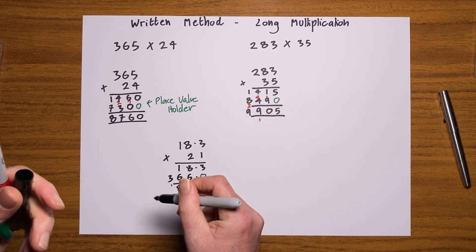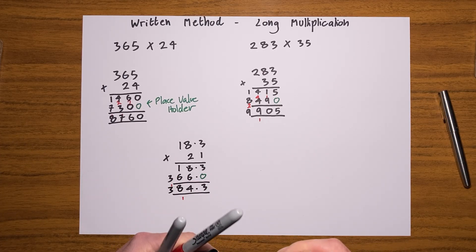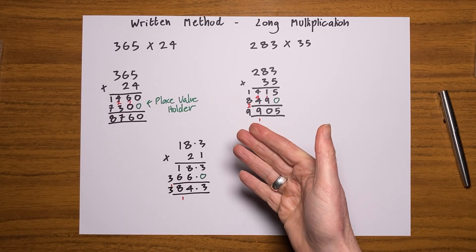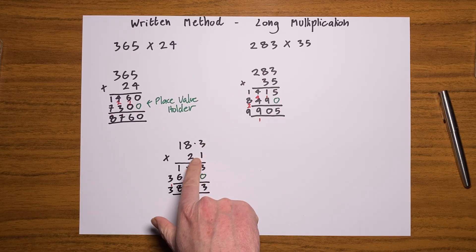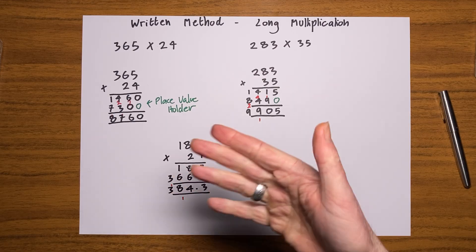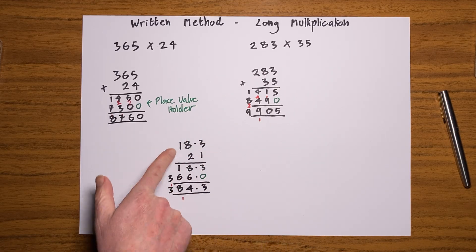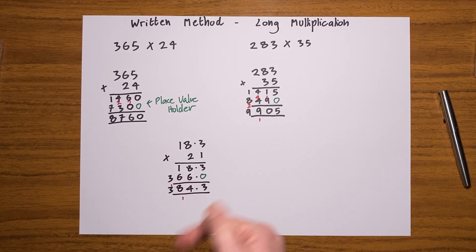Nothing to add to that three, so just bring it straight down, and I'd have 384.3. It would have been exactly the same if the decimal point had been in this. I could have done 183 times 2.1, and as long as I keep it in the same column, it's absolutely fine. Or I could have put the decimal here and had 1.83.